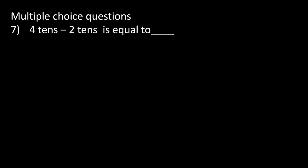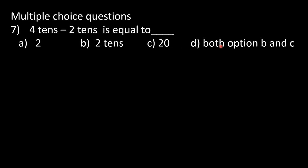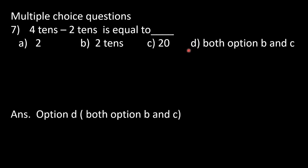Question number 7: 4 tens minus 2 tens is equal to dash. Options: A: 2, B: 2 tens, C: 20, D: both option B and C. 4 tens means 40 and 2 tens means 20, so 40 minus 20 is 20. Also, 4 tens minus 2 tens by backward counting gives 2 tens. Both B and C are correct, so answer is option D, both B and C.